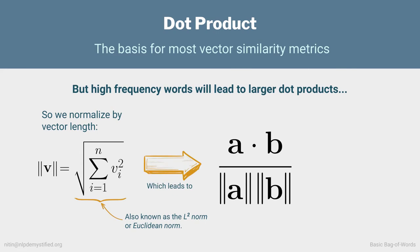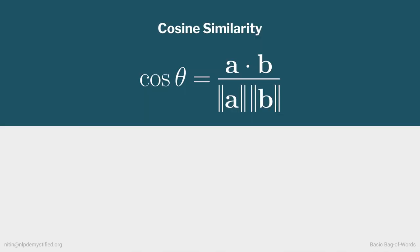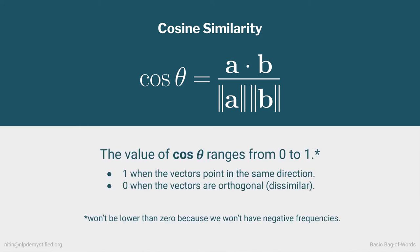Normalizing by vector length leads us to dividing the dot product of the two vectors by the product of the lengths of the vectors, which is the same as the cosine of the angle between two vectors. We've now arrived at the most common similarity metric used in NLP: cosine similarity. Anytime we measure similarity between two vectors using this metric, we'll get a 1 if they're pointing in the same direction, and 0 if they're orthogonal. The range of values will always be between 0 and 1 inclusive, because we won't have any negative frequencies.